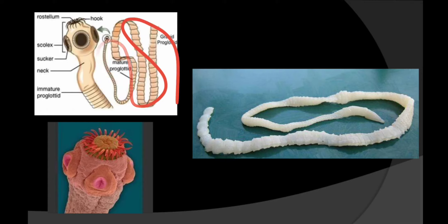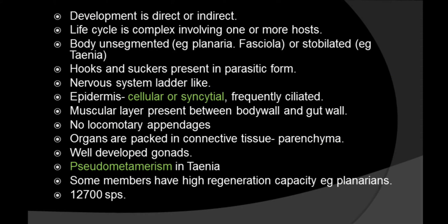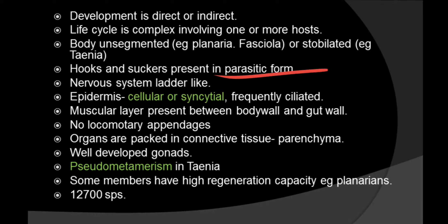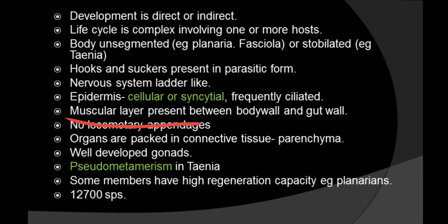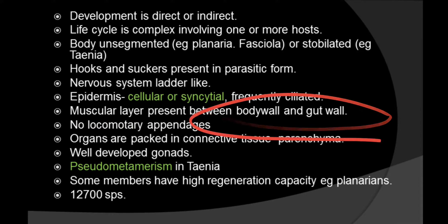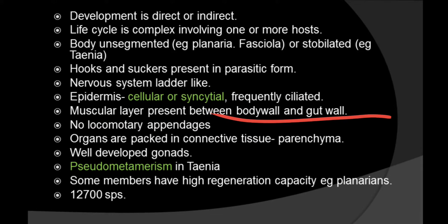The strobili contains proglottids — these are the segments which are known as proglottids. The nervous system is ladder-like. Now moving on to the next point: epidermis is cellular or syncytial. Syncytial means many nuclei are present, and it is frequently ciliated as well. A muscular layer is present between the body wall and the gut wall, which is also an important characteristic feature of this phylum.